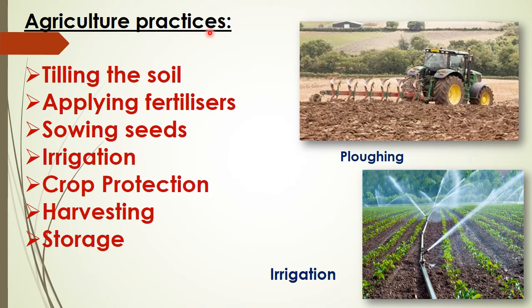Agriculture practices. Let us study the steps to be taken while growing crops. The first is tilling the soil — the soil is made loose with a plough, which is called ploughing or tilling. Loose soil allows air and water to pass through and helps the roots of crops to penetrate easily. Next is applying fertilizers — manure and fertilizers are added to the soil to provide nutrients that crops need for a good yield. Fertilizers get easily mixed in tilled soil.